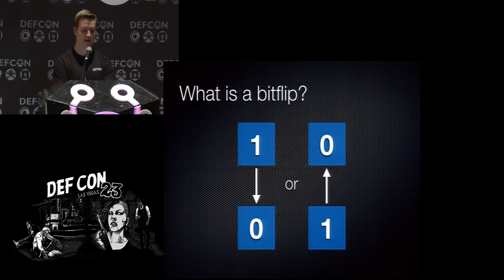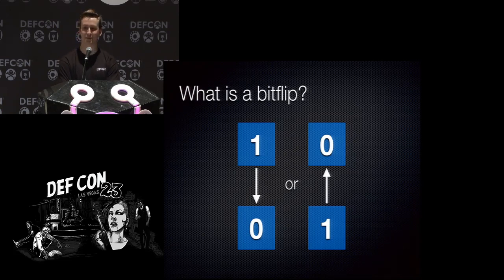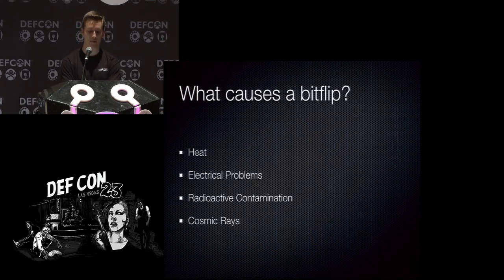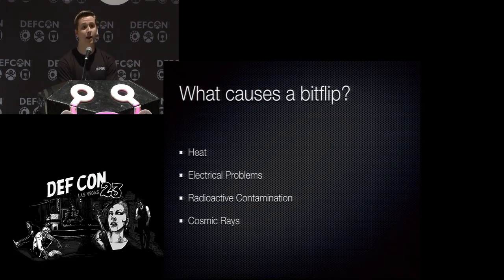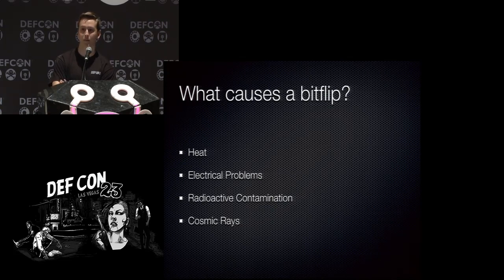So what's a bit flip? A bit flip occurs when a bit flips from a 1 to a 0 or a 0 to a 1 — a pretty simple concept. It can happen for a variety of reasons: heat, electrical problems, radioactive contamination, cosmic rays, among others. I'm not going to focus much on what causes a bit flip; I'm going to focus on how we can actually exploit them. We will take a quick look at the history of bit flips.